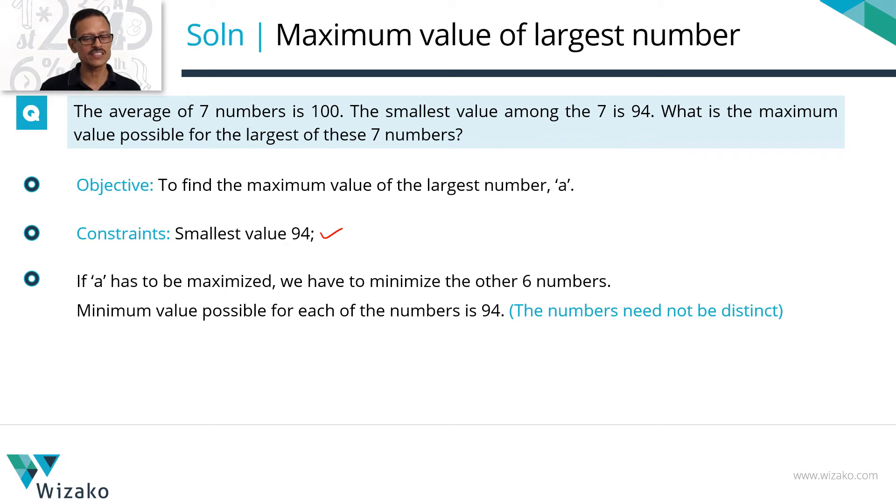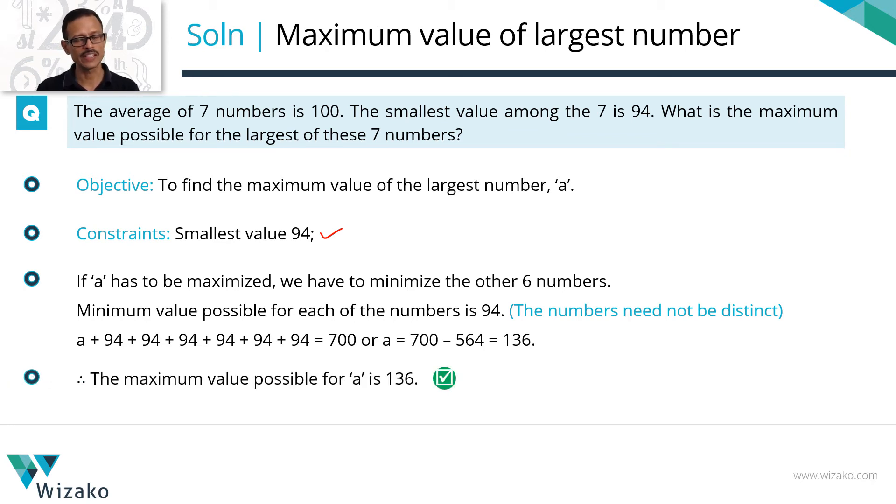All of these numbers, each of these numbers can be a 94 because the question does not place a constraint that these numbers should be distinct. So A maximum plus 94 as a value assigned to the six numbers should add up to a 700. Consequently, A equals 136. That's a maximum value possible for A.